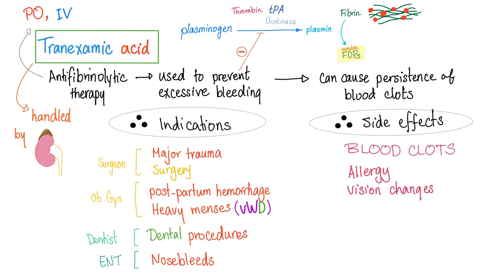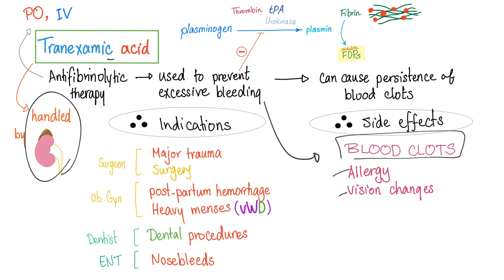Side effects: if you're going to prevent bleeding, you're going to cause clotting — actions have consequences, there are no solutions only trade-offs. Side effects include blood clots, allergic reactions, and some vision changes. Tranexamic acid is handled by the kidney — don't forget this.